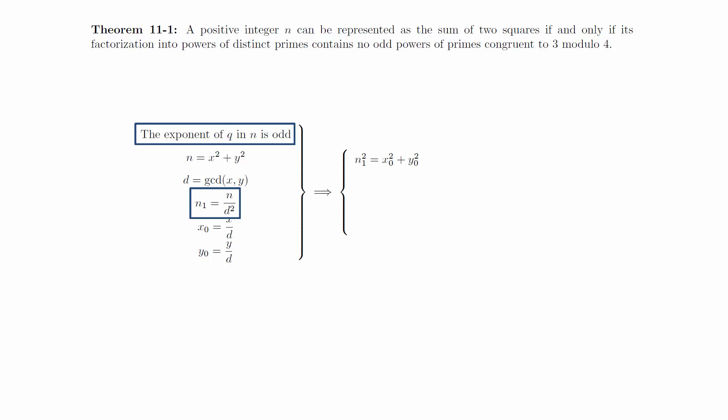Since the exponent of q in the factorization of n is odd, it will remain odd after dividing by a perfect square. This means that the exponent of q in n₁ must also be odd. Furthermore, we know that q cannot divide either x₀ or y₀ because otherwise it would have to divide both and we've already divided out all the common factors.